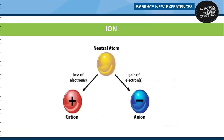Ions: a neutral atom contains an equal number of positive charges (protons) and negative charges (electrons). However, atoms do not always exist in neutral form; it is possible for atoms to gain or lose electrons. An atom which loses an electron has lost one of its negative charges and is therefore left with an excess of one positive charge — this is called a cation, or positive ion. An atom that gains an electron has an excess of negative charge and is called a negative ion, or anion.